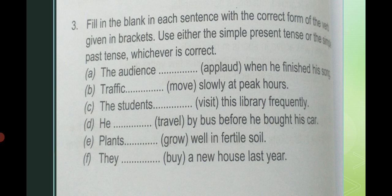'The traffic dashed slowly at peak hours' — this is a regular/habitual action, so it is present tense: 'Traffic moves slowly at peak hours.' 'The students dash this library frequently' — frequently indicates regular action, present tense, and students is plural so no s needed: 'The students visit this library frequently.' 'He dashed by bus before he bought his car' — bought is second form, so past tense: 'He traveled by bus before he bought his car.'